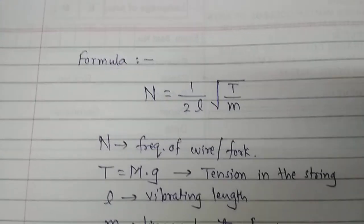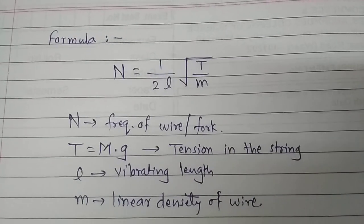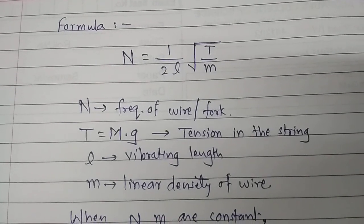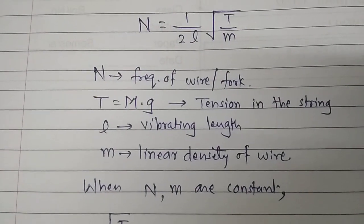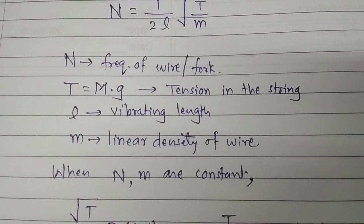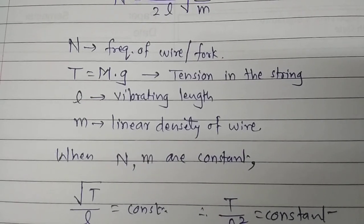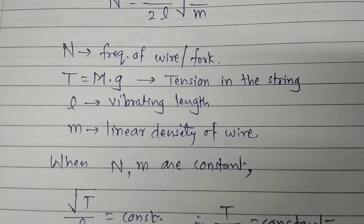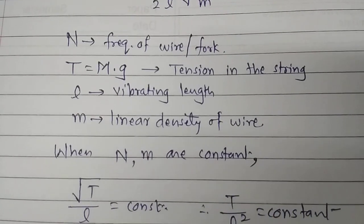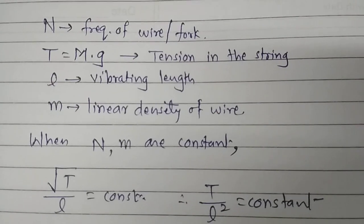Let us have a look at the formula. The fundamental frequency of transverse vibrations of a stretched wire is given by n equals 1 upon 2L times the square root of T by m, where n is the frequency of the wire vibrating in unison with the tuning fork. T equals capital M into g is the tension in the string, where g is the constant acceleration due to gravity. L is the vibrating length of the wire, and small m is the linear density of the wire.